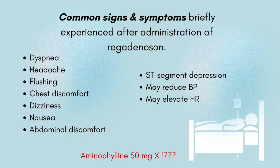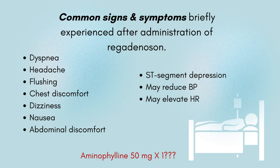Now that you have the correct test ordered, the charge nurses will need to change their protocol and have the regadenosin injection ready. It is a standard injection of 0.4 mg IV push. You may need a new consent form if the original does not cover this change. Explain to the patient that the nurse will give the injection followed by the radiopharmaceutical from the nuclear technologist. The patient may suddenly feel like they are running on a treadmill and may feel short of breath, have palpitations, headache, nausea, flushing, abdominal discomfort, or they may not feel anything at all.